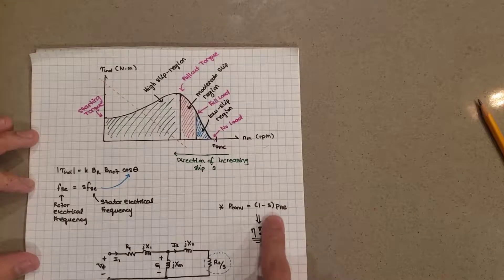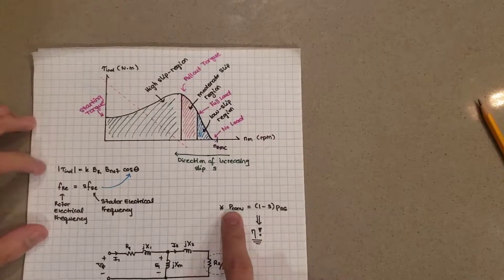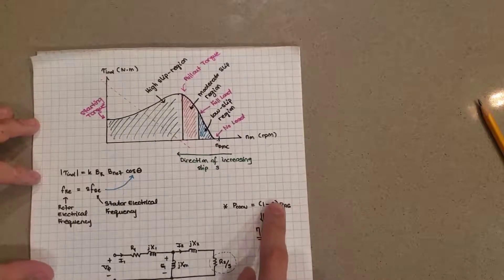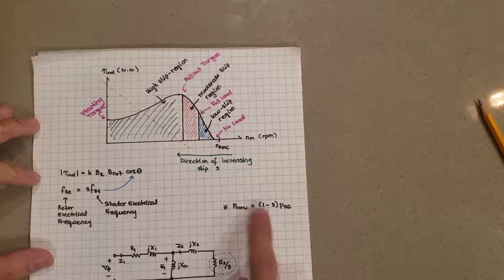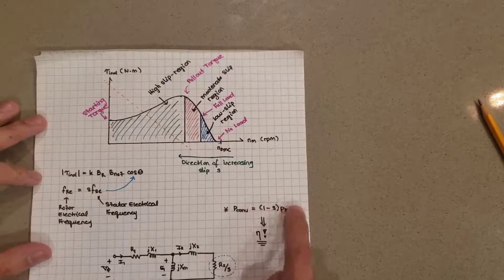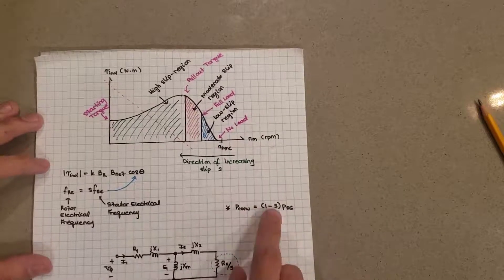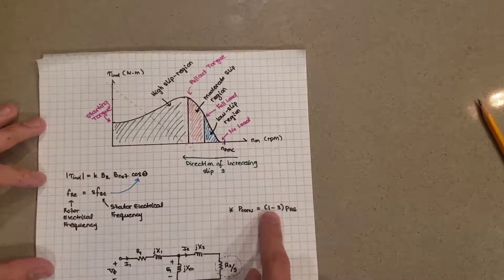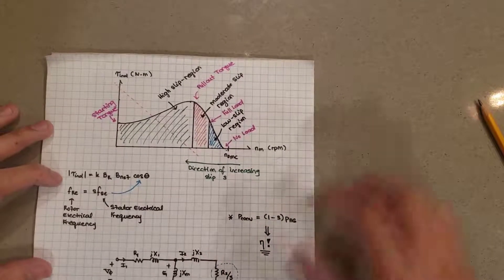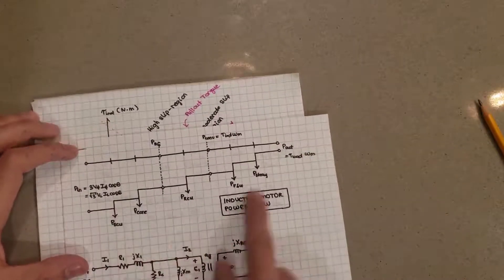What does that kind of say? That tells you that the amount of the air gap power present that is converted into mechanical power is equal to 1 minus the slip ratio. So you can imagine if you have a high slip ratio, if you're operating at a high slip ratio, let's say 0.9, and 1 minus 0.9, 0.1, you're getting only 10% of that air gap power is being converted into actual mechanical power. Whereas if you had a small slip ratio, then say it was like 0.05, then that's 0.95 in there, so 95% of your air gap power is being converted into mechanical power.